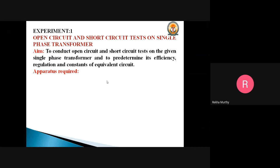Let me briefly explain why we conduct this experiment. Whenever we would like to find out the behavior of any device under certain operating conditions, we need to predetermine its parameters — such as efficiency, regulation, and other constant parameters. To find out the performance characteristics of a transformer, we need to conduct two tests: the open circuit test and the short circuit test. The open circuit test is also called the no-load test. Its purpose is to determine the core or iron or excitation losses, no-load current I₀, and the shunt branch parameters R₀ and X₀ of the equivalent circuit.